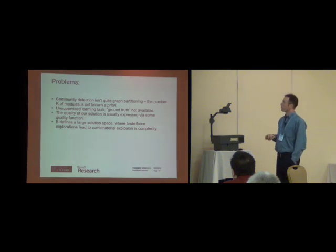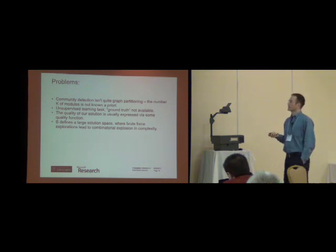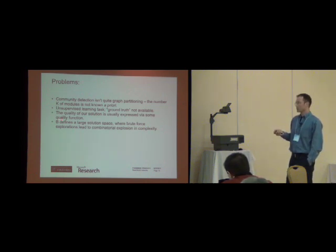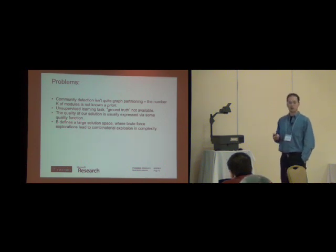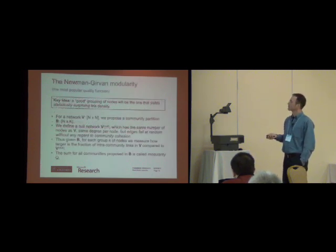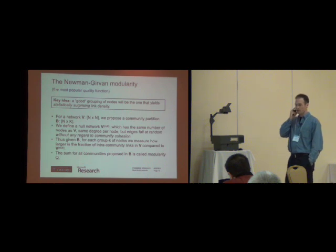But there are a few problems. Well, first of all, it's not quite a graph partition because we don't know a priori the number of communities that are looking for. A bigger problem, we don't have the ground truth. And we have the issue of quality functions. There are different ways of measuring how good their community detection was. And finally, it's an NP-hard problem.